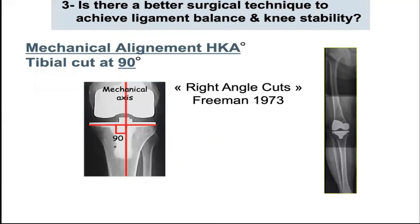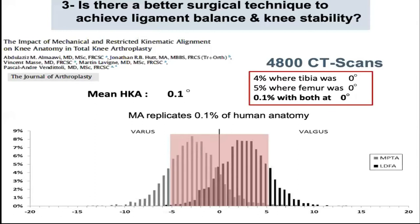The current gold standard alignment for total knee arthroplasty is the mechanical alignment technique described by Freeman in 1973. The goal is to systematically perform neutral femoral and tibial cuts to obtain a neutral hip-knee-ankle angle. However, is this the patient's native alignment? After evaluating 4,800 CT scans of patients scheduled for total knee arthroplasty, we found that the mean hip-knee-ankle angle was 0.1 degree — very near to the mechanical alignment goal — but only 4% had the proximal tibia at 0 degrees and 5% had the distal femur at 0 degrees, and only 0.1% had both proximal tibia and distal femur at 0 degrees. We can conclude that systematically putting the limb in neutral alignment replicates only 0.1% of human anatomy.